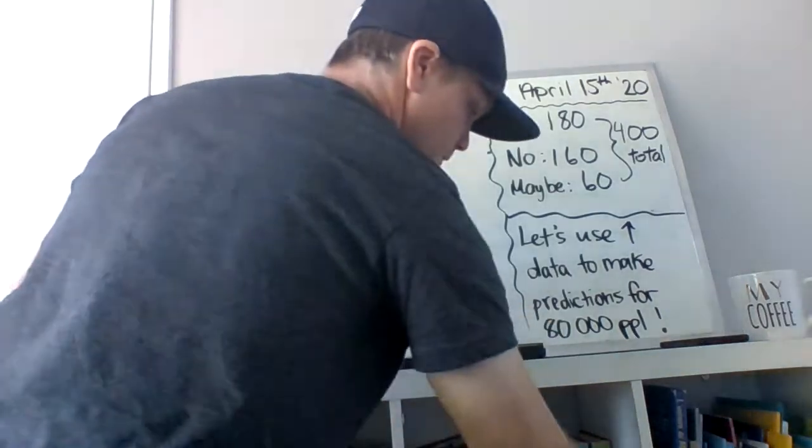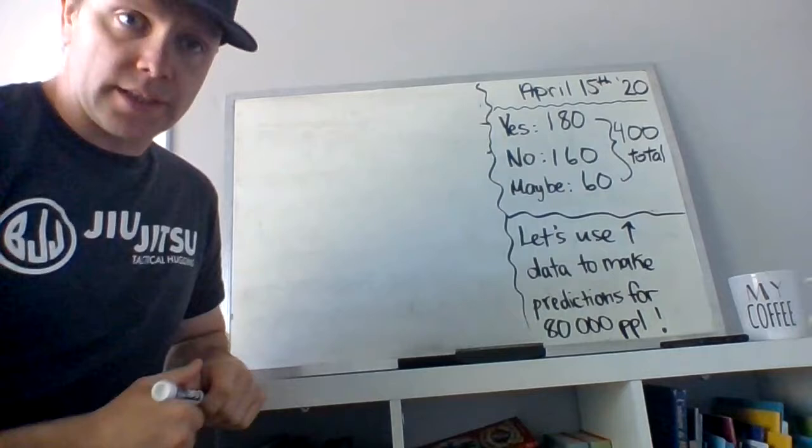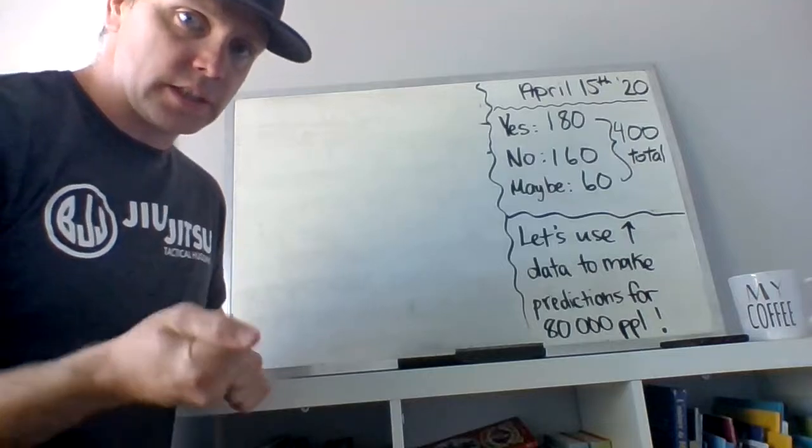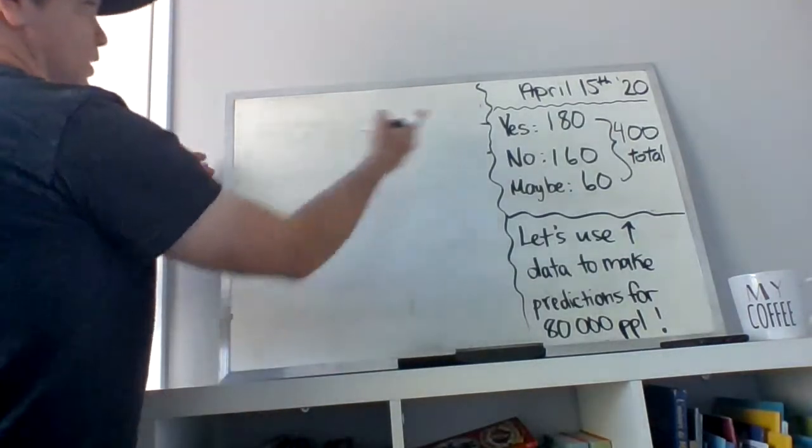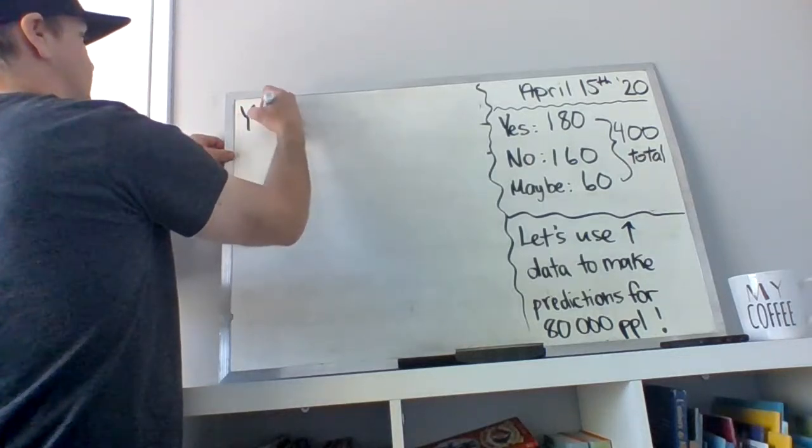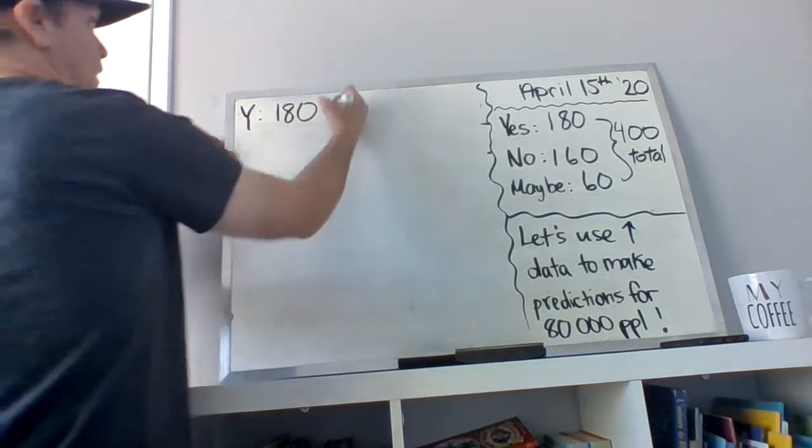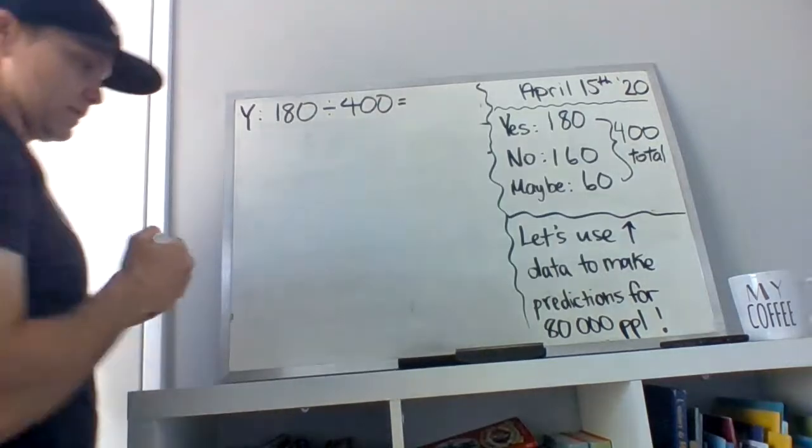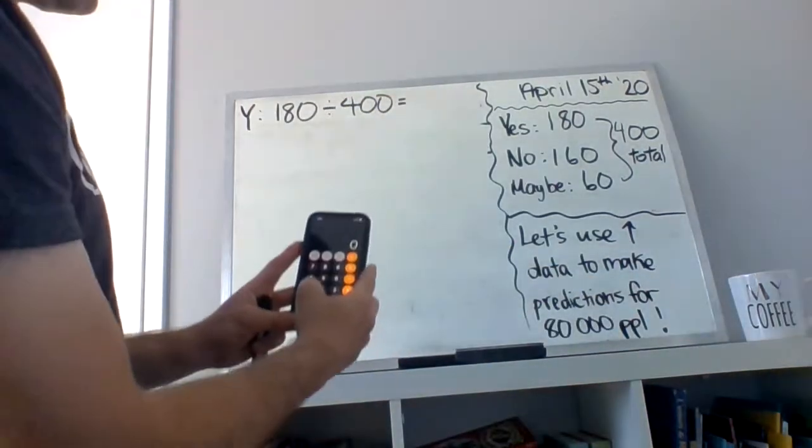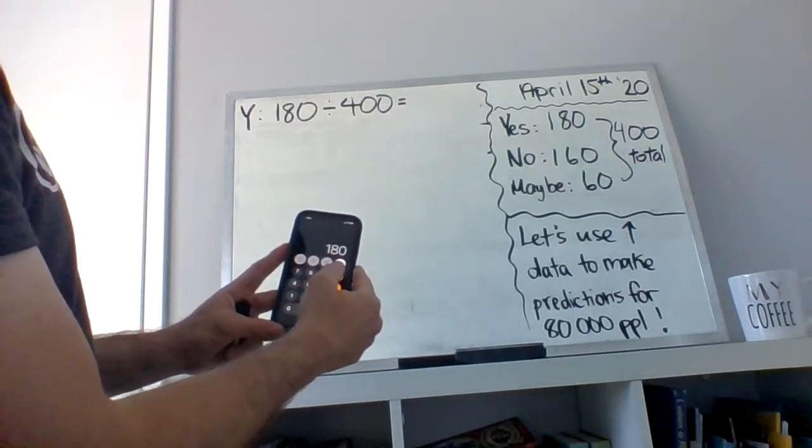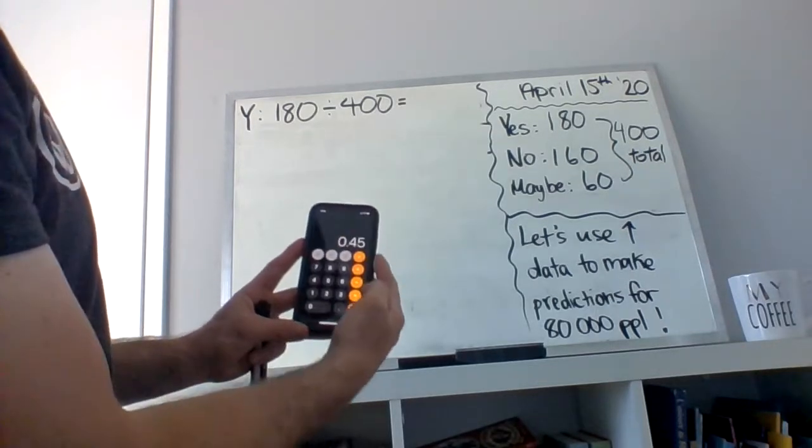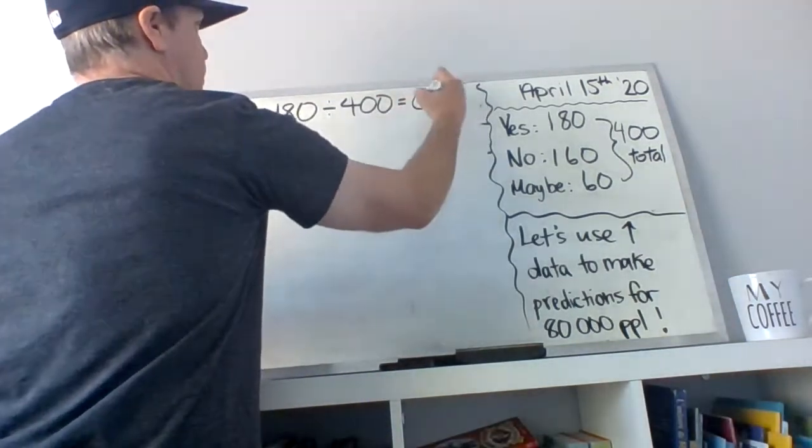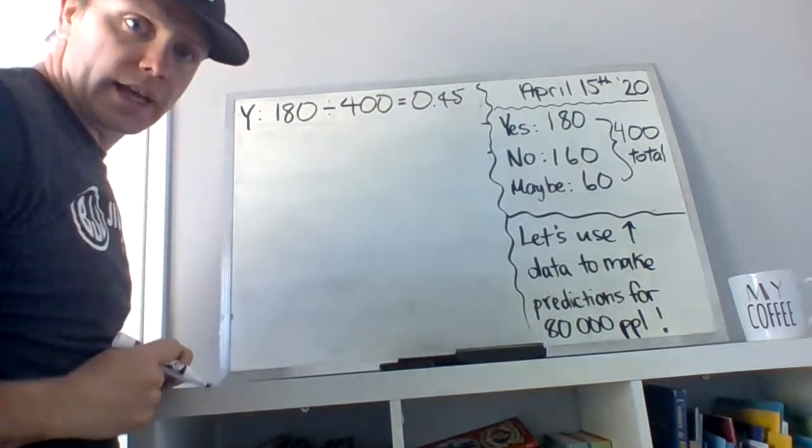So we have 180 people that said yes. What I need to do is I need to turn that into a percent. I need to find the percent of people that said yes. This is a refresher. You take your 180 people that said yes, and then you divide it by your total 400. That's going to give us a percent. So on my calculator, I am going to go 180 divided by 400. That's going to give me 0.45, so 45 percent of people said yes.